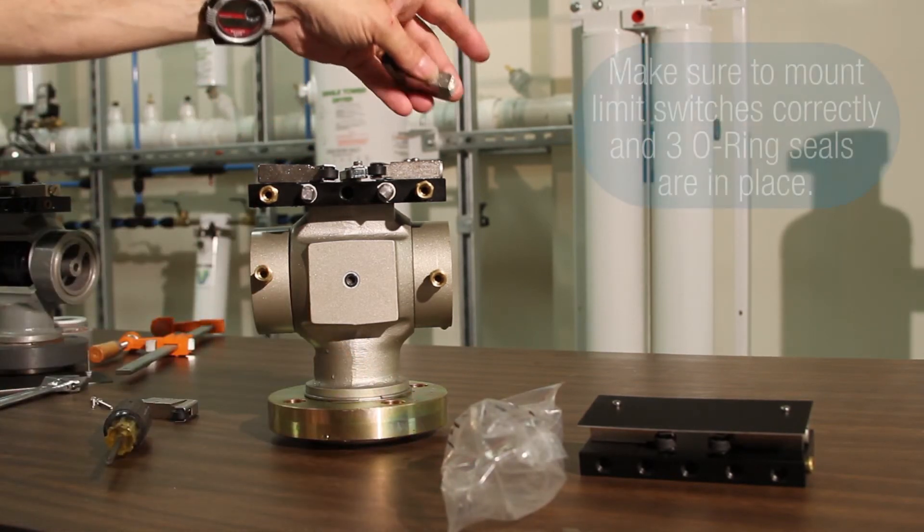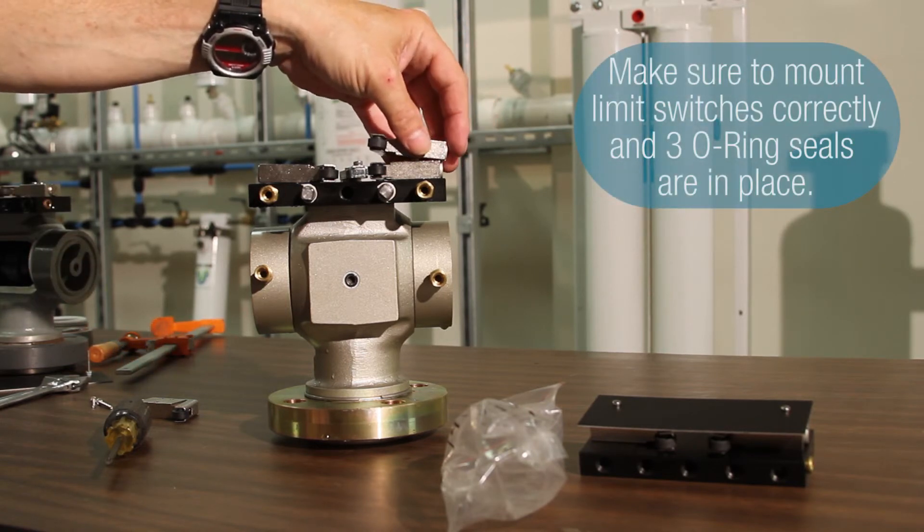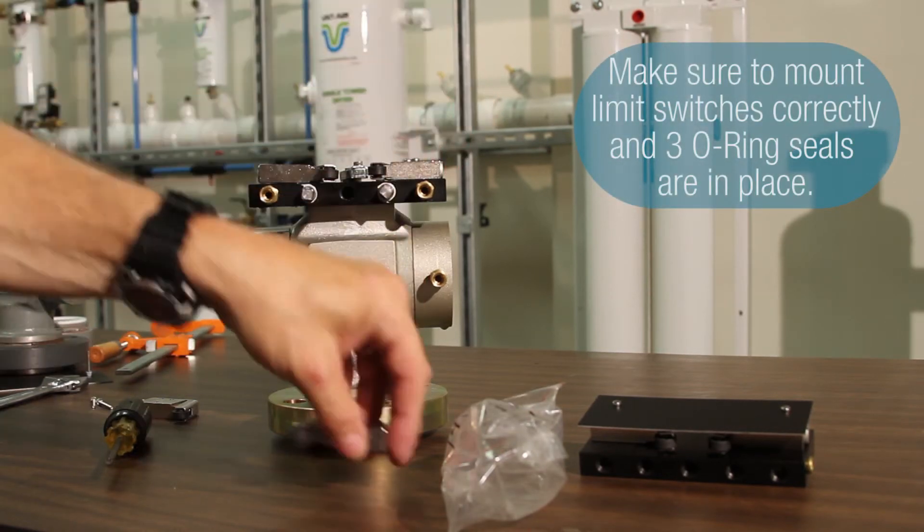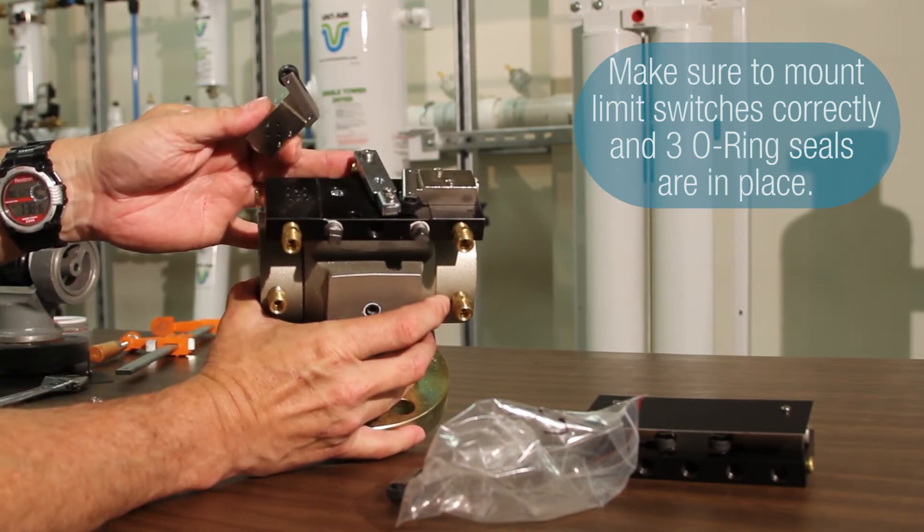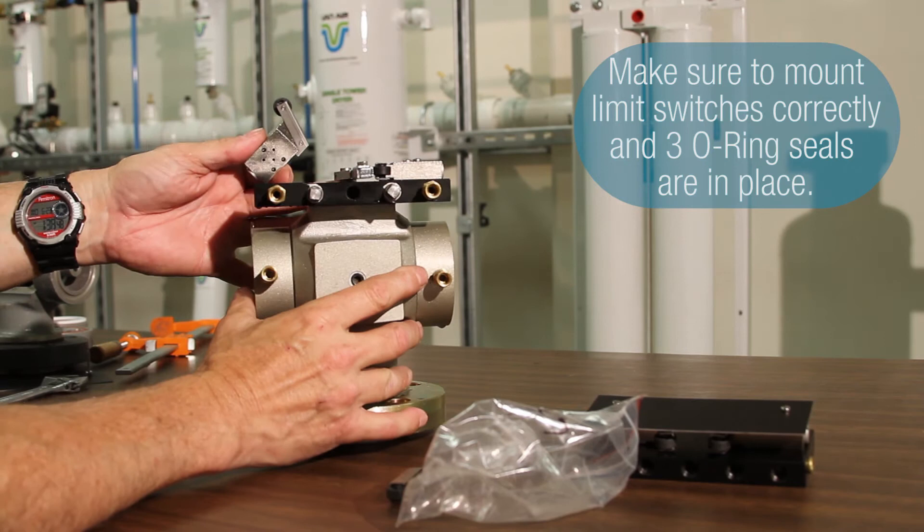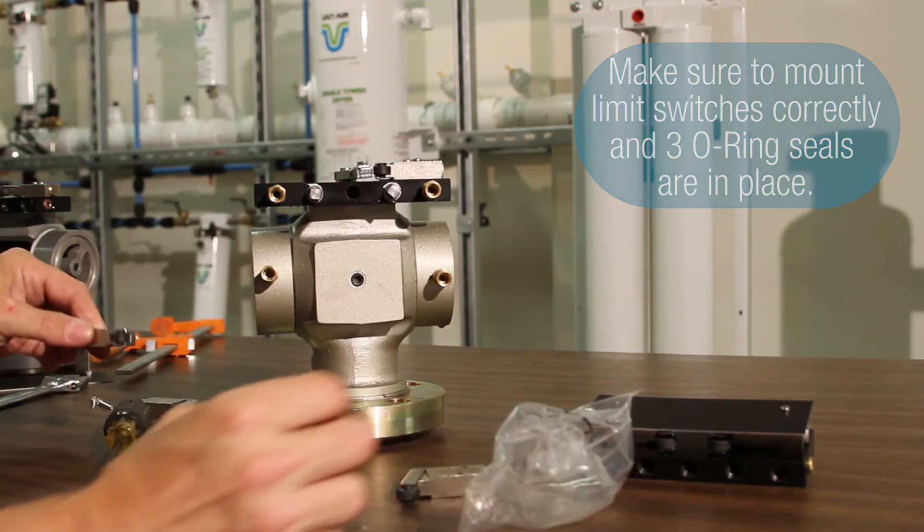So again, there is a right and left pneumatic limit switch. When you replace them, just make sure that you're mounting them correctly on the valve body, and make sure that the three O-ring seals are in place on the manifold block. That's all you have to do.